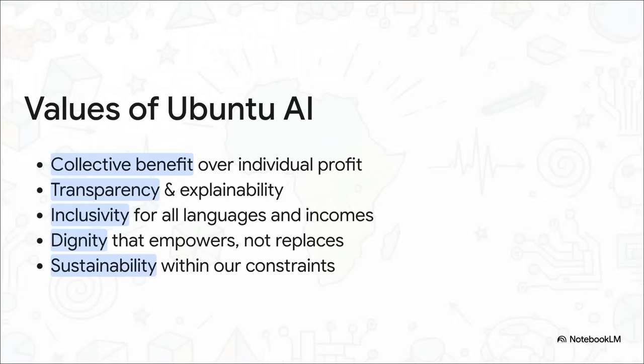So what does an AI built on the principle of Ubuntu actually look like? It prioritizes the collective good over individual profit. It's built from the ground up to be transparent and explainable. It's inclusive of all people, all languages, all income levels. It seeks to empower people, not replace them. And it's sustainable. And get this, these aren't just feel-good ethical afterthoughts. They are a genuine competitive advantage.